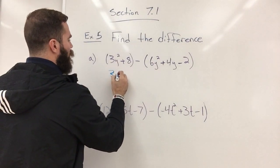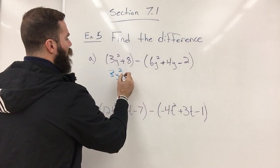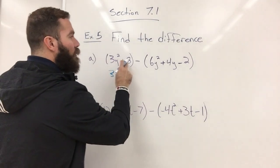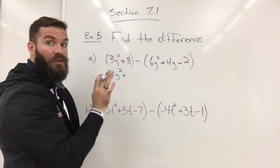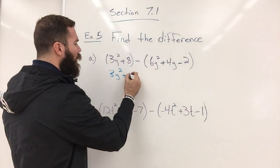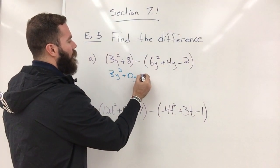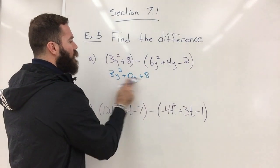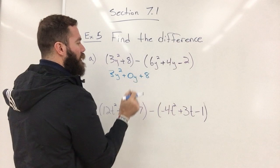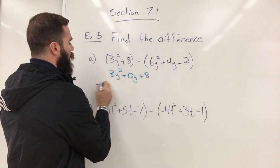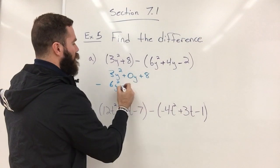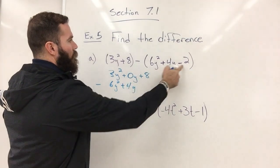So let's begin with writing our 3y squared, and now there's no term with just the y variable. So I'm going to leave it blank or I could write 0y and then plus 8. This will help me to space correctly when I go in and put this one. So I'm going to do minus and I have 6y squared plus 4y minus 2.